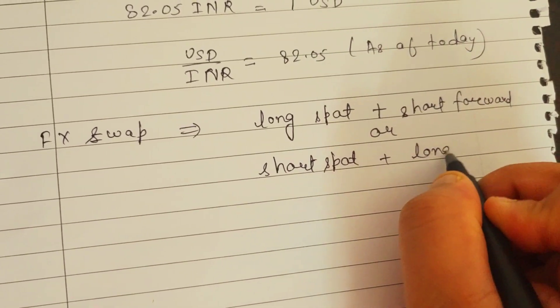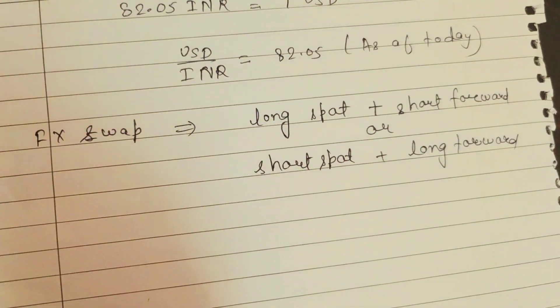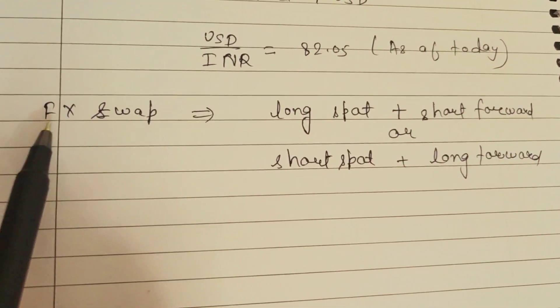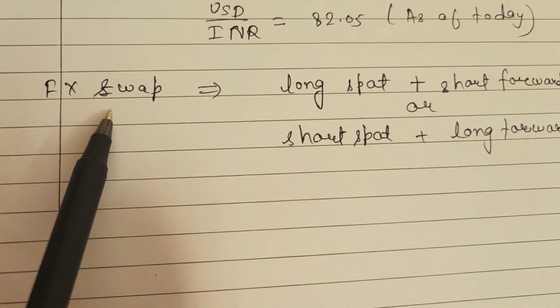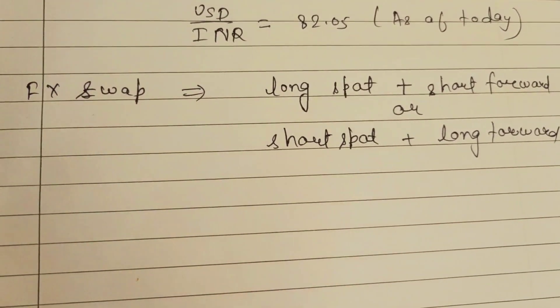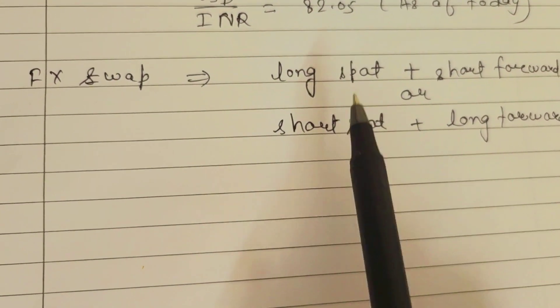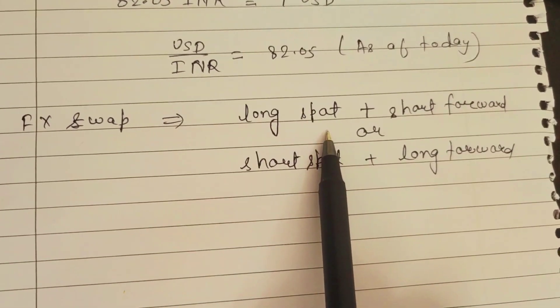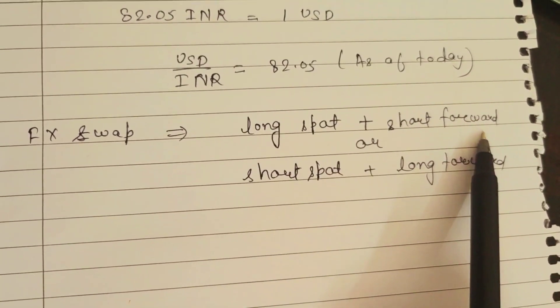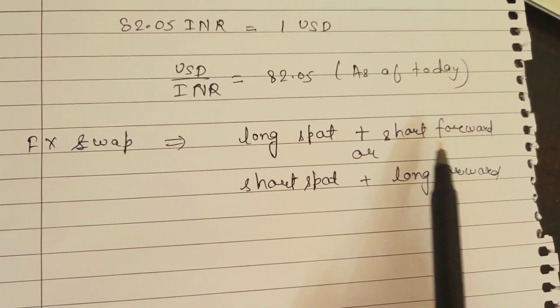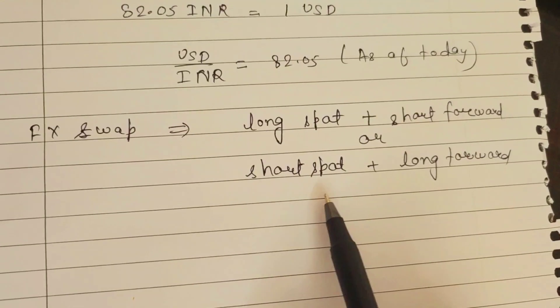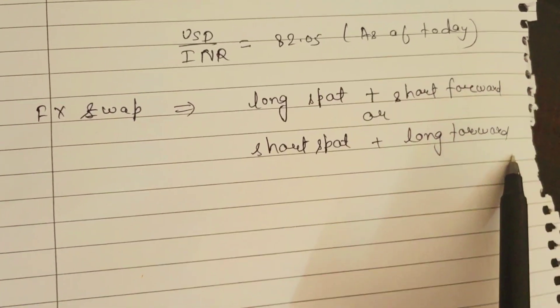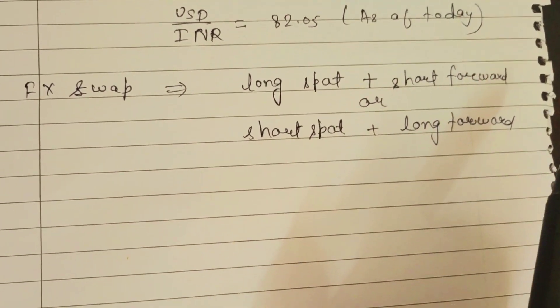Or it is a short spot contract with a long forward. FX swap is a combination of two kinds of contracts which are offset in nature, exactly opposite. In FX swaps, one person does a long spot position, buying on spot rate today, and also does a forward contract for short position to sell it. Or the other thing is they sell on spot rate and buy on a forward rate.